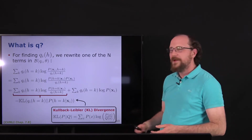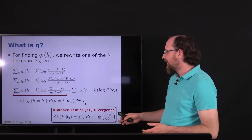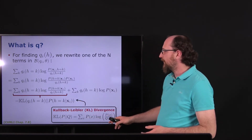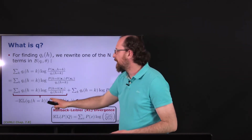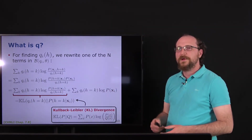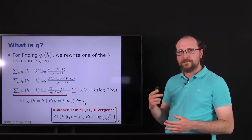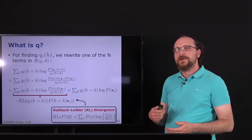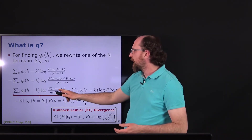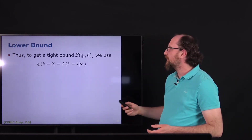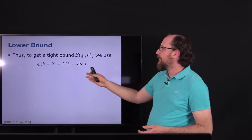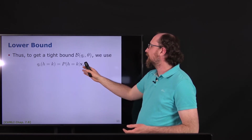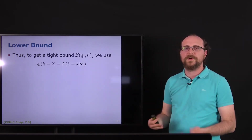When p and q are equal, the KL divergence is zero. So when we set q exactly to p(h|x), the KL divergence becomes zero, giving us a tight bound below the log likelihood. To find a tight bound we simply set q to p(h=k|x_i).